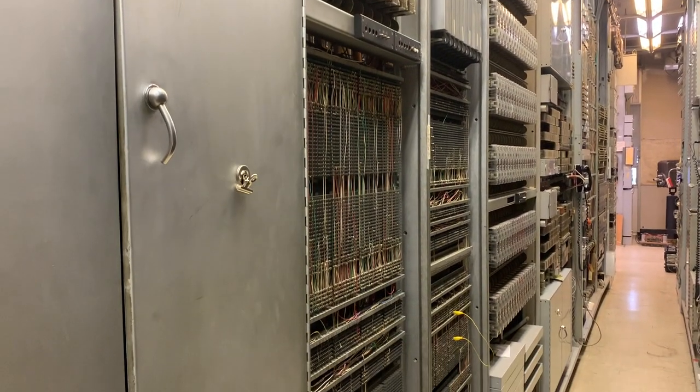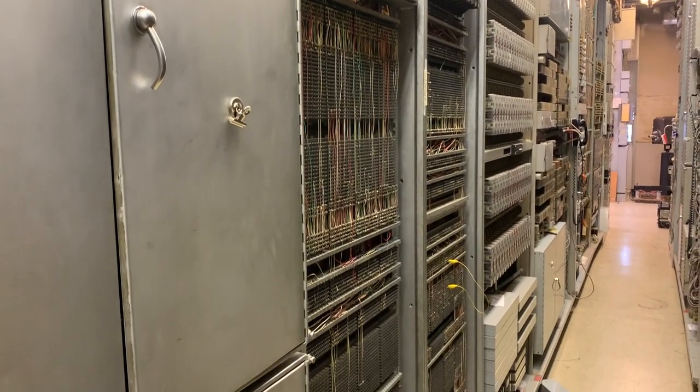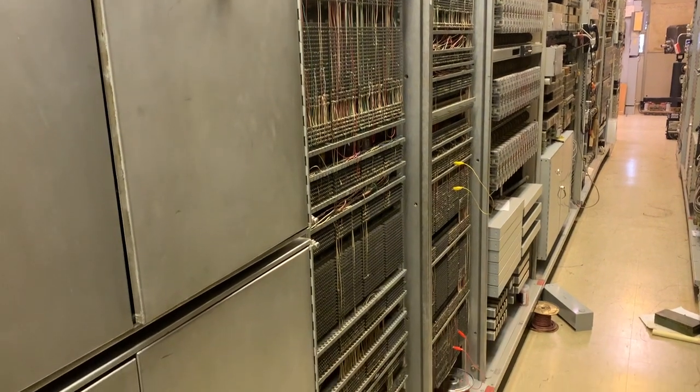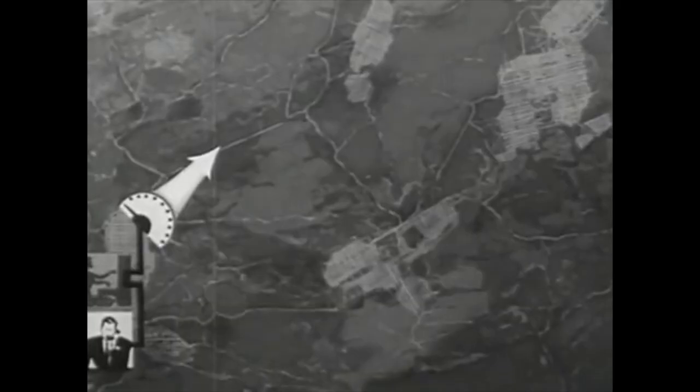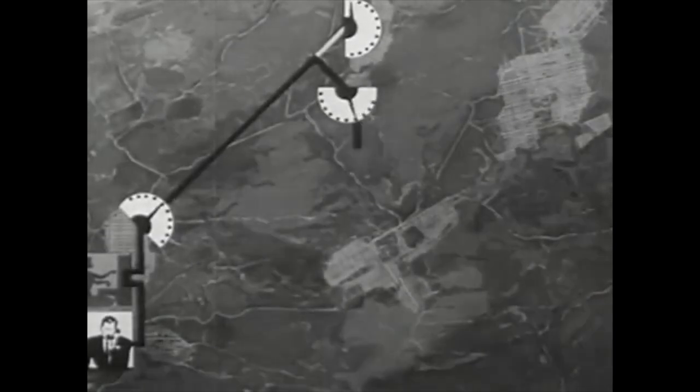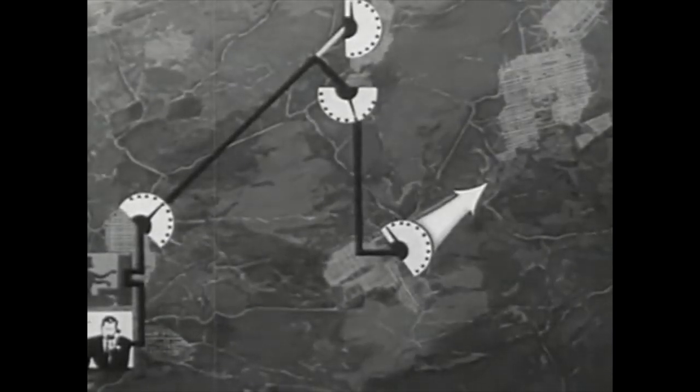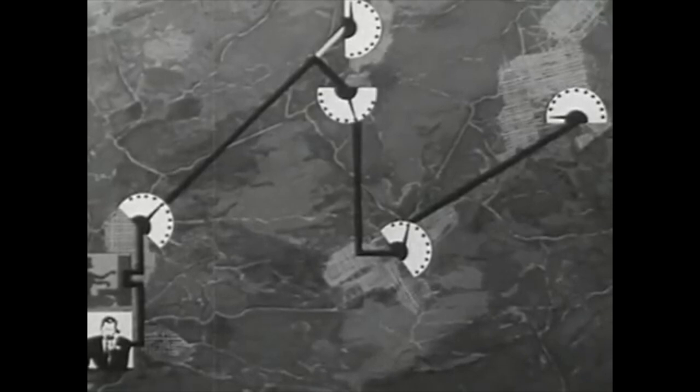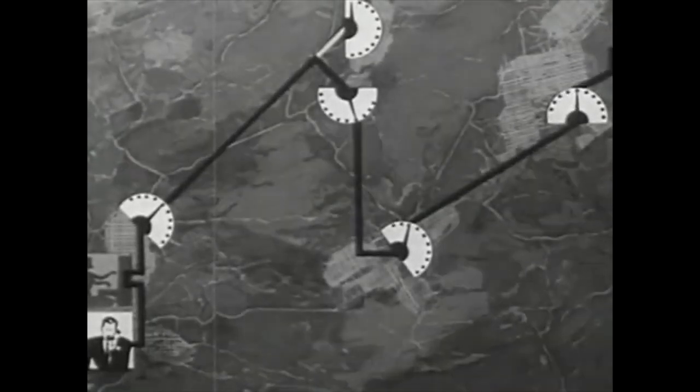In a previous video about the number one crossbar, I mentioned that markers allow us to do some really cool stuff with call setup, and I promised that I'd go into more detail on that. In particular, I'd like to talk about things called route advance and second trials. Both of these capabilities were an important part of what set crossbar apart from earlier systems. It might be a little difficult to appreciate how cool this is from a modern perspective, so before we dive in, let's get some context.